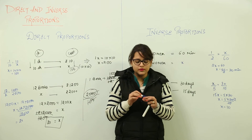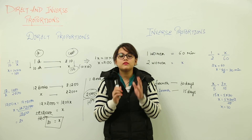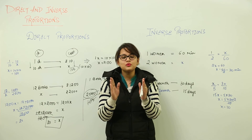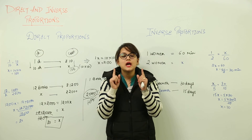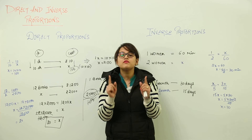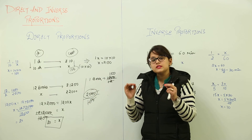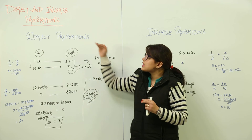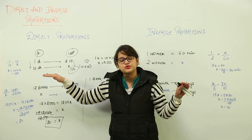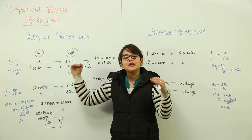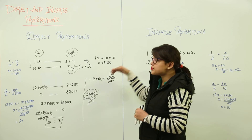Whenever a question comes, first identify which are the two quantities involved. Then determine whether they have a direct proportion or an inverse proportion relationship. Once you can identify that, you can apply the correct formula accordingly.